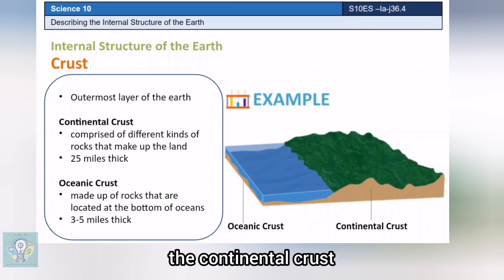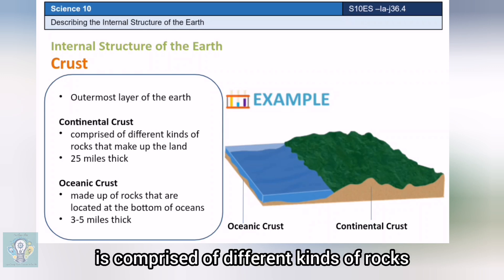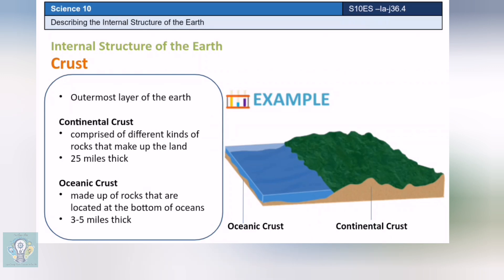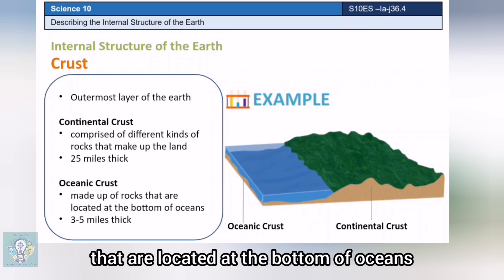The continental crust and the oceanic crust. The continental crust, approximately 25 miles thick, is comprised of different kinds of rocks that make up the land. The oceanic crust, approximately 3 to 5 miles thick, is made up of rocks that are located at the bottom of oceans.